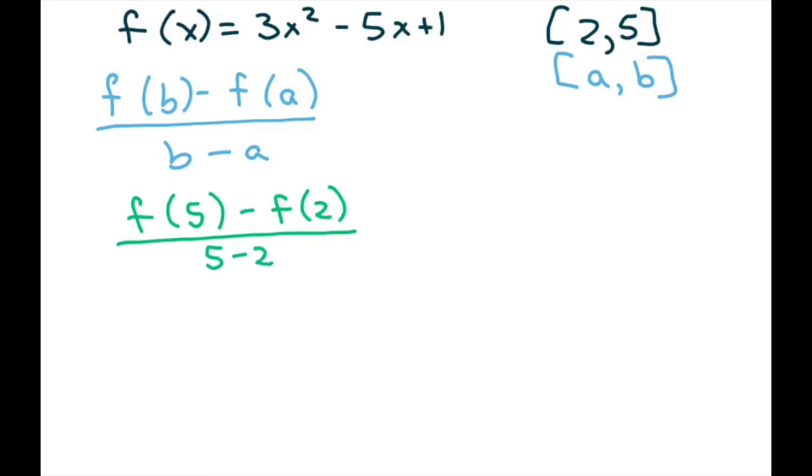So we have to find f(5). f(5) equals 3 times 5² minus 5 times 5 plus 1, and this is going to give you 51. And then we have to do f(2), which is going to be 3 times 2² minus 5 times 2 plus 1, and that should give you 3.